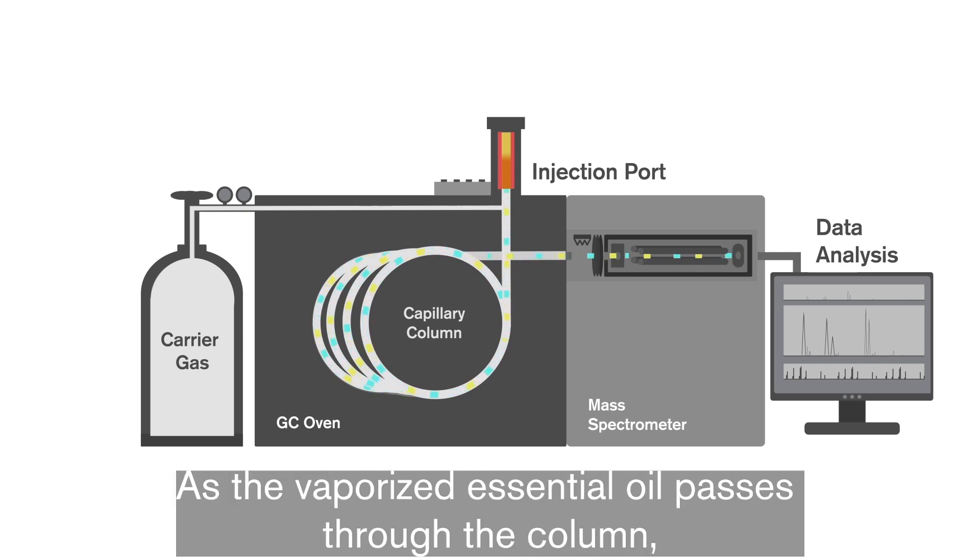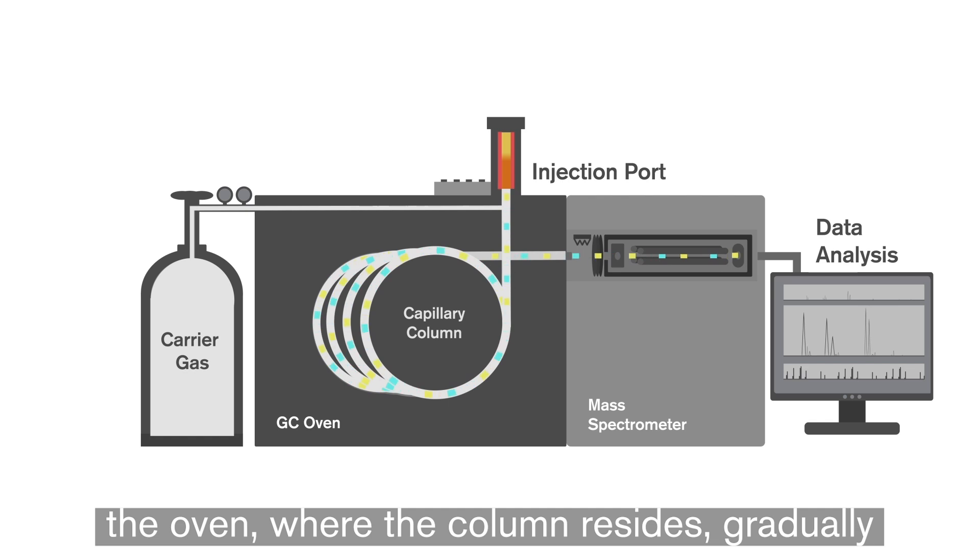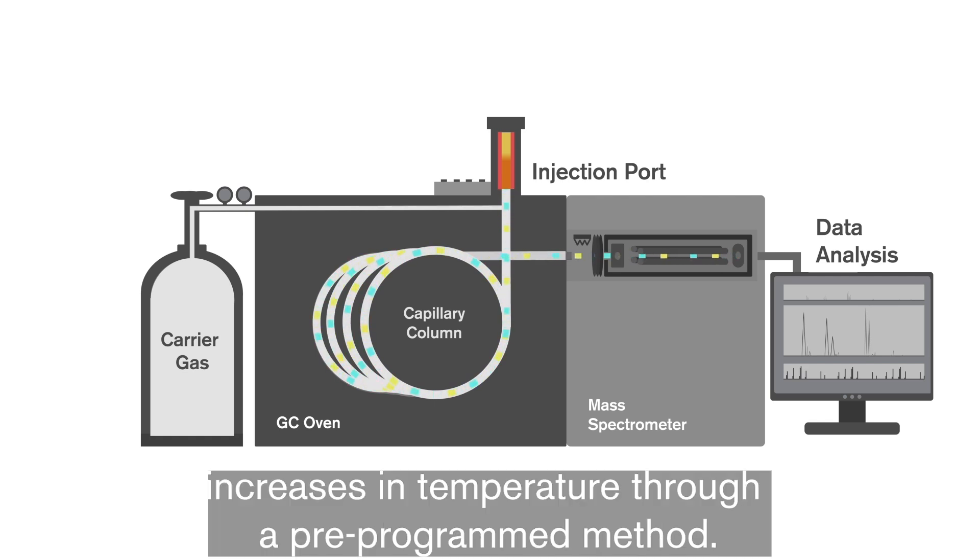As the vaporized essential oil passes through the column, the oven where the column resides gradually increases in temperature through a pre-programmed method.